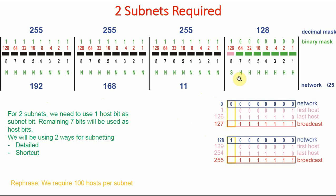For the second subnet, the fixed subnet bit is 1. The minimum host value is all zeros, and the maximum is all ones. Combining the fixed subnet bit of 1 with all zeros gives 128, so the second subnet's network ID is 192.168.11.128. With all host bits set to 1 and the subnet bit fixed at 1, all eight bits are 1, and converting to decimal gives 255. So the broadcast address is 192.168.11.255.